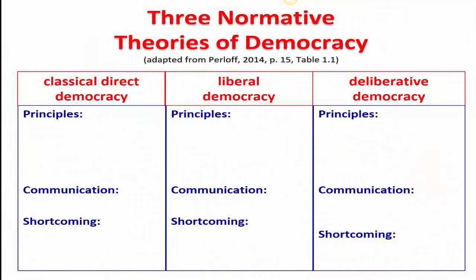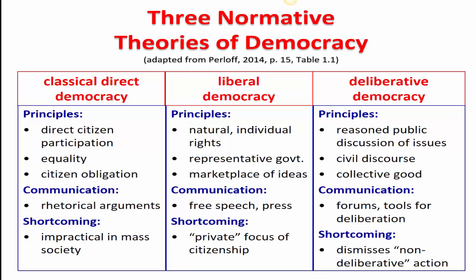To summarize, as Richard Perloff does in his textbook, understanding these three normative theories of democracy — classical direct democracy, liberal democracy, and deliberative democracy — gives you a good context for figuring out why and how the political communication we use today operates the way it does, and provides a basis for evaluating political communication from an ethical perspective: what kind of democracy ought we to have as citizens? If you have any questions please don't hesitate to ask, and I'll see you in the next online lesson.